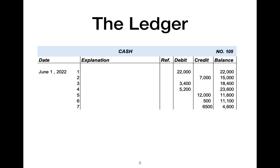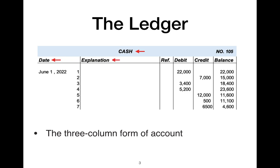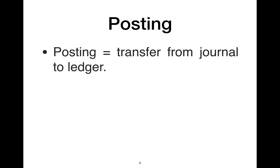This figure shows a typical form of the ledger using hypothetical data from a cash account. This format is called the three-column form of account. Here we have the date, an explanation of the transaction, and the references which identify the specific location in the journal — like a page number or line number — where a transaction was recorded. Then we have the debit, the credit, the balance, and finally the code of the account in the company's chart of accounts. Transferring journal entries to the ledger accounts is called posting.